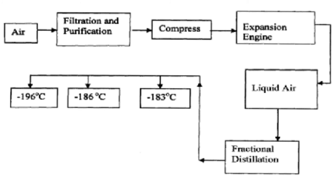Then the air is taken through the compressor, where the conditions required are a pressure of 200 atm and a temperature of negative 200 degrees Celsius. The function of the expansion engine is to expand and contract the air into liquid form. In the process, it also removes neon and helium. The components that remain in air are: nitrogen, argon, and oxygen. This mixture has different but close boiling points; therefore, we are able to separate them using fractional distillation.